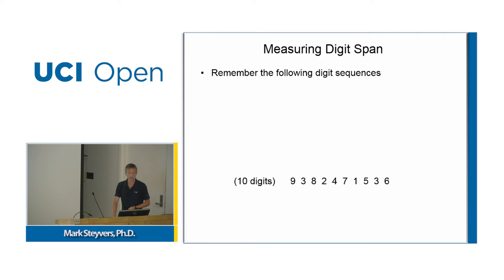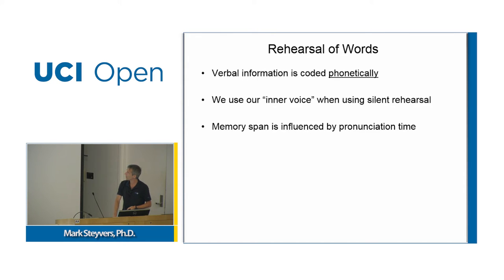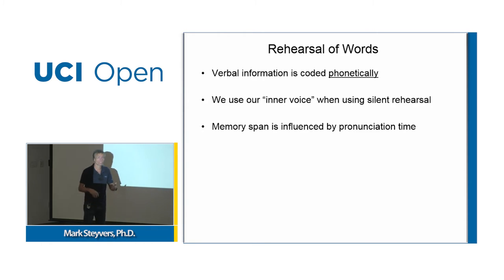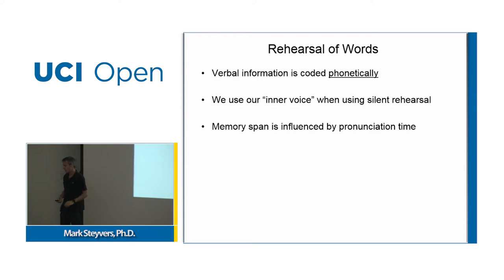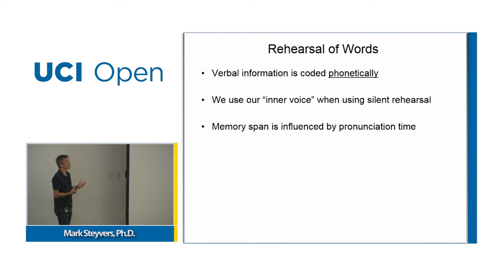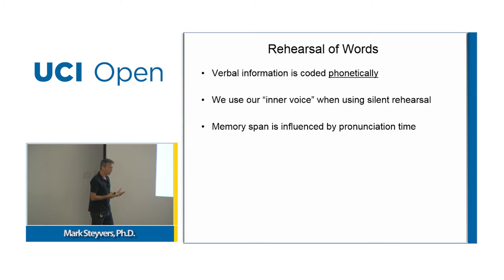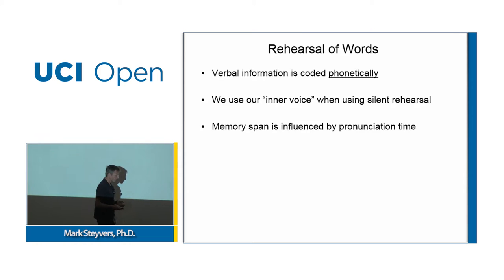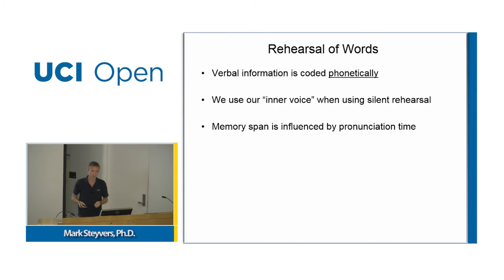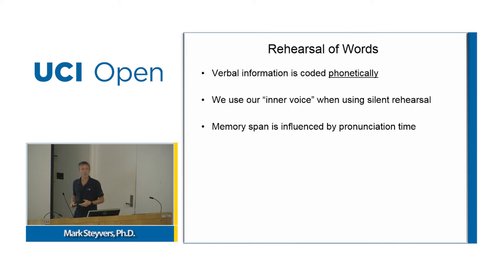One view of short-term memory — the old-fashioned view — is that you have some discrete slots, about seven, and you can put things in those slots. A more modern view is that the capacity of working memory is more continuous. When you store verbal material, it depends on how you phonetically encode things. We all have the feeling of using our inner voice when we silently rehearse things, and it turns out that your memory span is influenced by how quick your inner voice is — by pronunciation time.